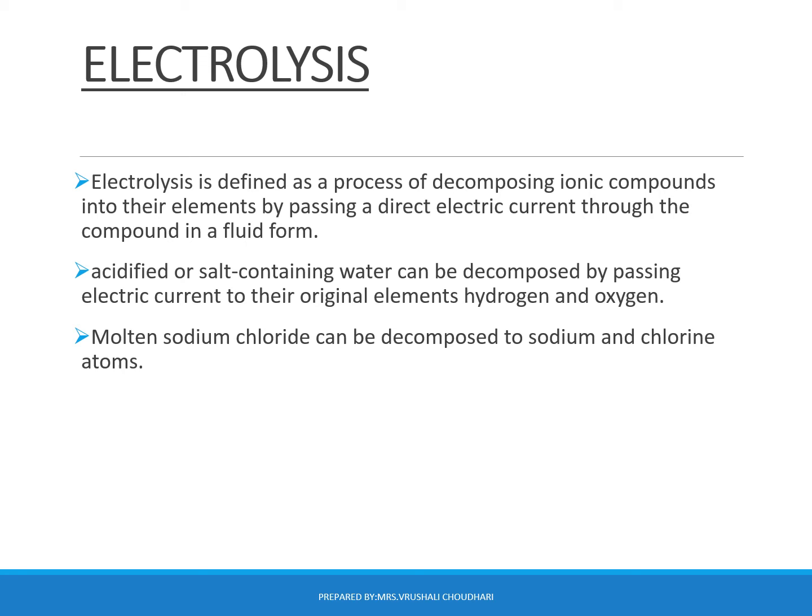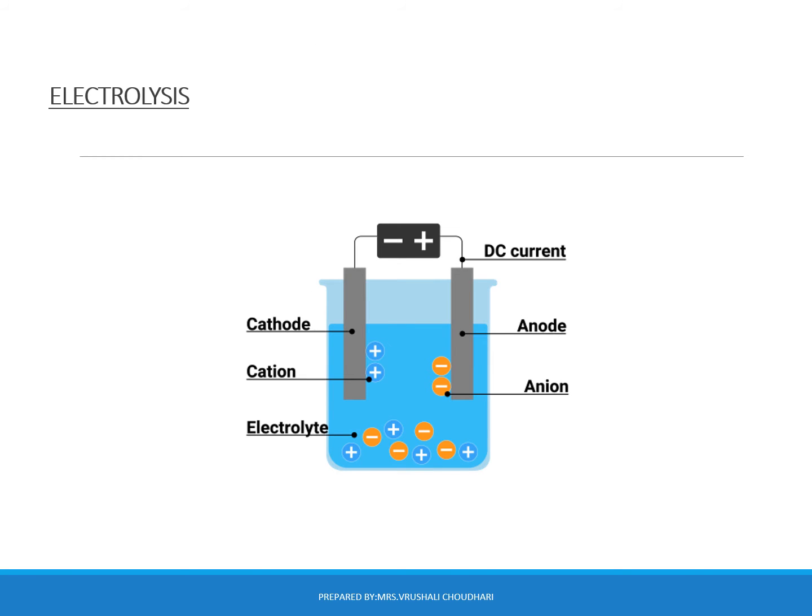Acidified or salt-containing water can be decomposed by passing electric current into its original elements, hydrogen and oxygen. Water is made up of H₂O — hydrogen and oxygen. When we pass current through it, it is separated into hydrogen gas and oxygen gas. Molten sodium chloride can be decomposed into sodium and chlorine. This is the basic electrolysis process.